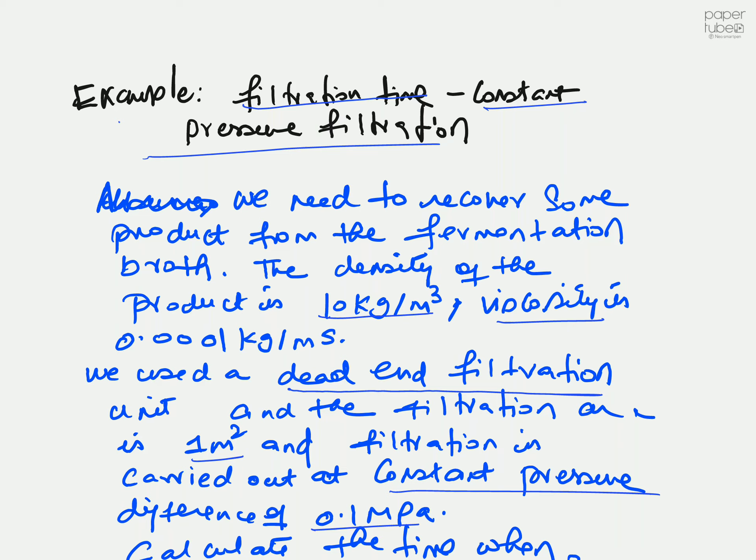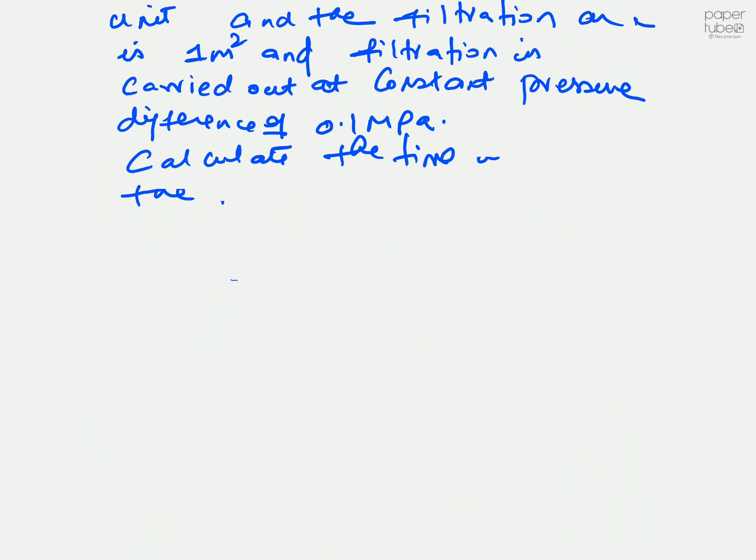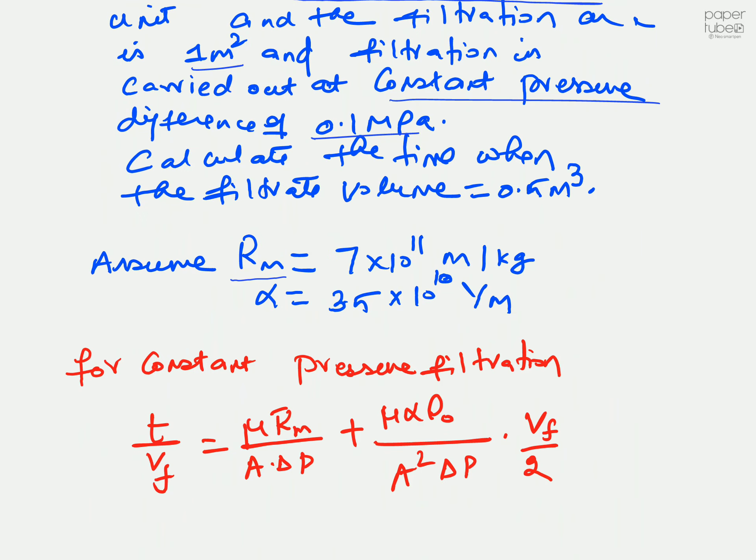We are going to operate the filtration unit at constant pressure, and that pressure difference is 0.1 mega Pascal. All you need to calculate is the filtration time when the filtrate volume is 0.5 meter cube. We have the resistance offered by the medium which is 7 into 10 to the power of 11 meters per kilogram, and the alpha factor which is 3.5 multiplied by 10 raised to the power of 10, 1 divided by meters.